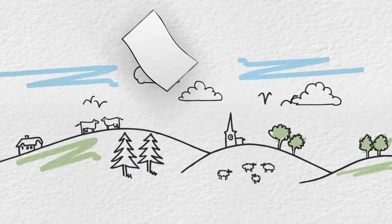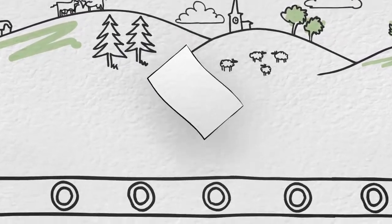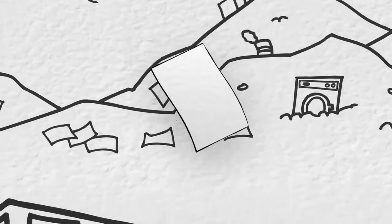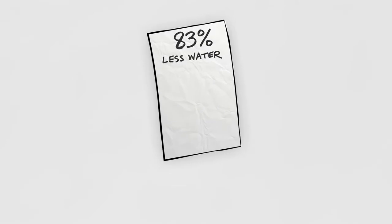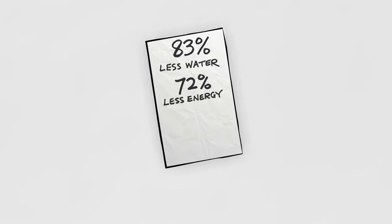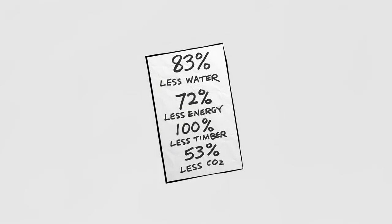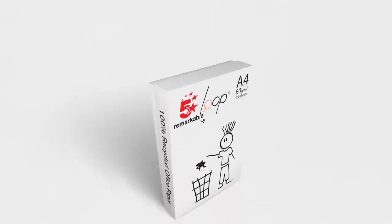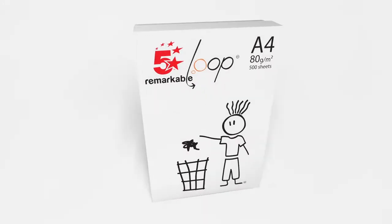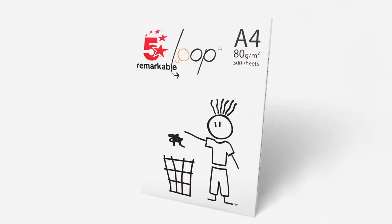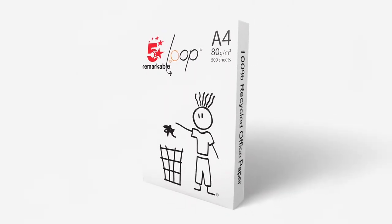So when a normal sheet of paper reaches the end of its life, remarkable loop paper lives on, up to 20 times longer than normal paper. It uses 83% less water, 72% less energy, 100% less timber, and 53% less CO2, making five-star remarkable loop paper the ultimate choice when you reduce, reuse, and recycle your office stationery.